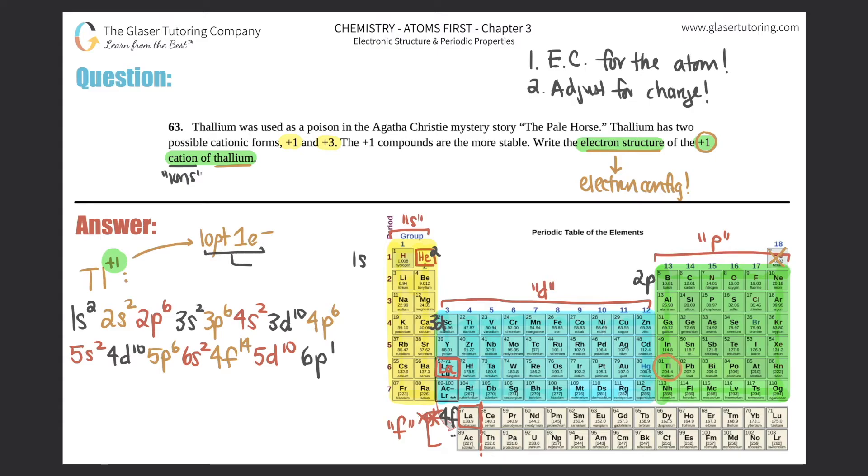What does this +1 charge tell us? This tells us that we lost one electron. And how do we lose electrons? You always lose electrons from the highest n number, the highest shell. Remember, n is just a quantum number for shell, which is the biggest coefficient.